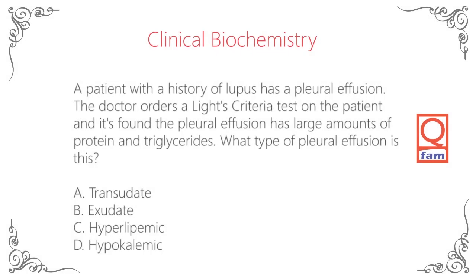A patient with a history of lupus has a pleural effusion. The doctor orders a Light's criteria test on the patient and it's found the pleural effusion has large amounts of protein and triglycerides. What type of pleural effusion is this? A. transudate, B. exudate, C. hyperlipemic, D. hypokalemic.